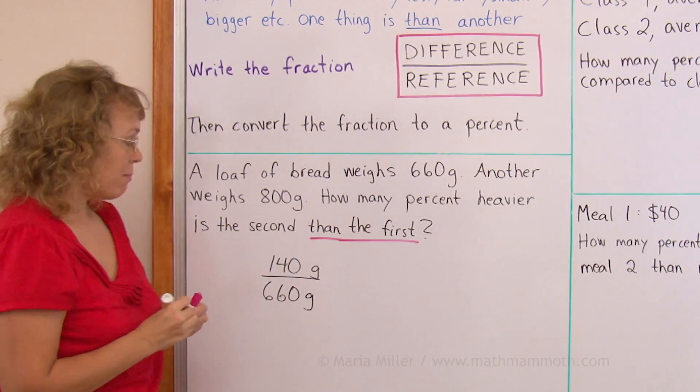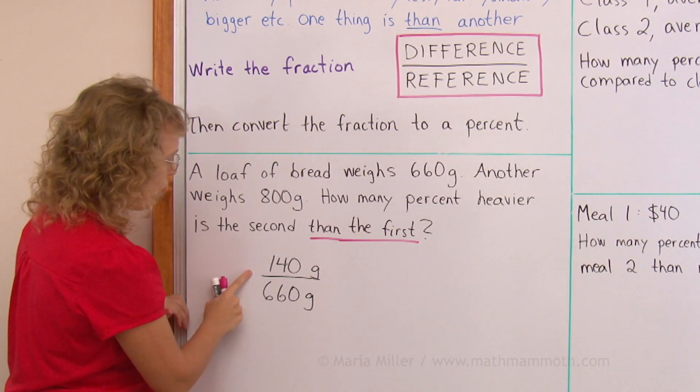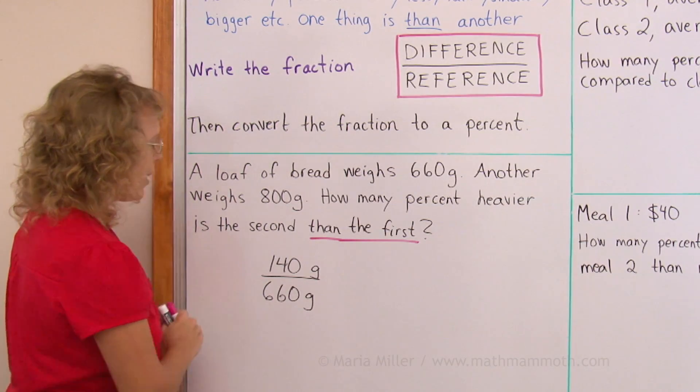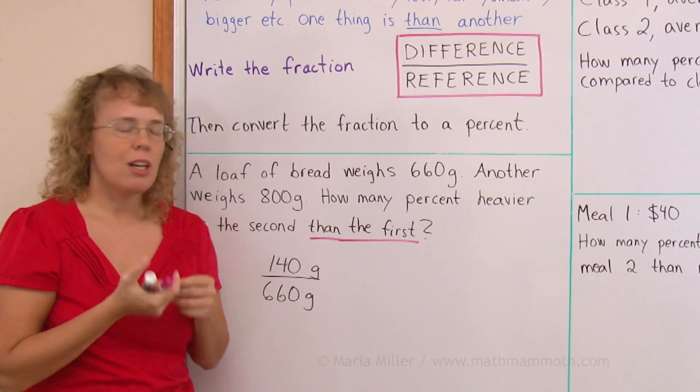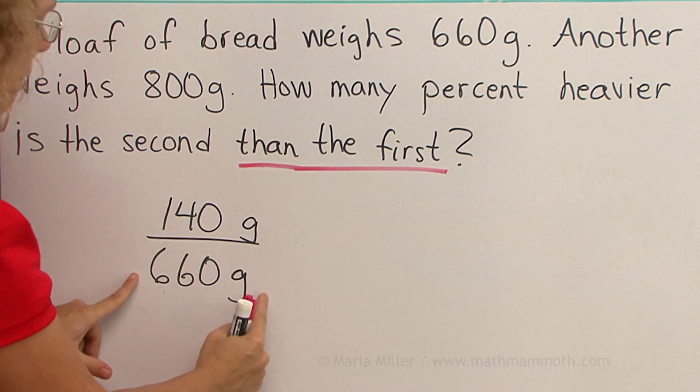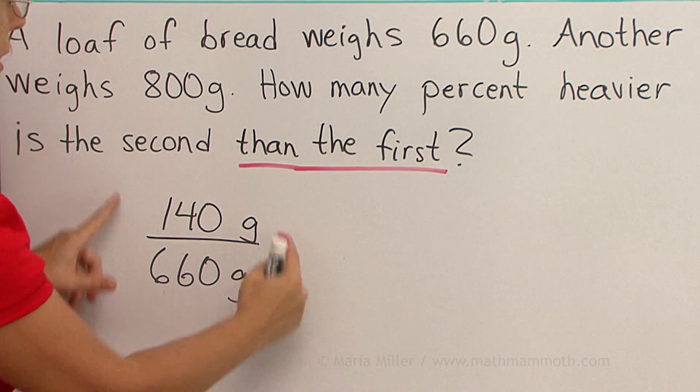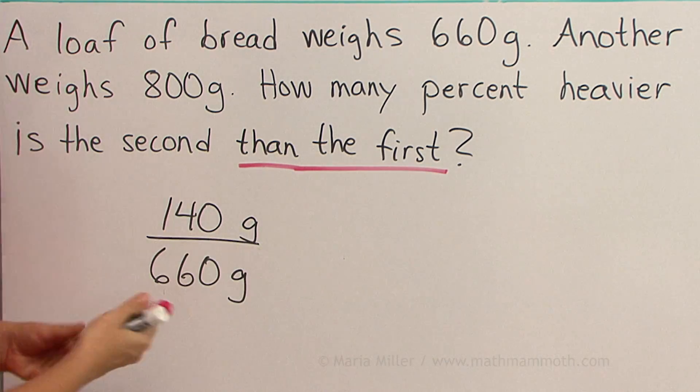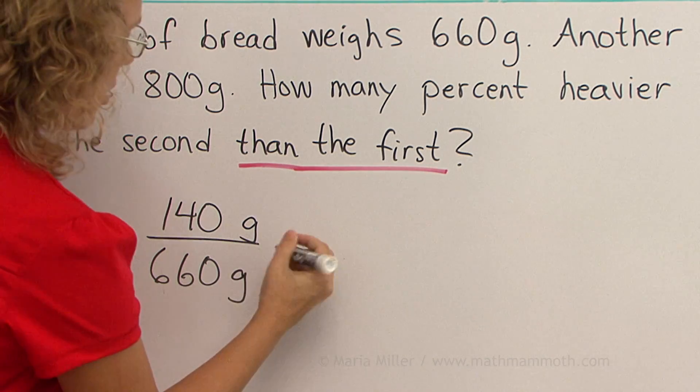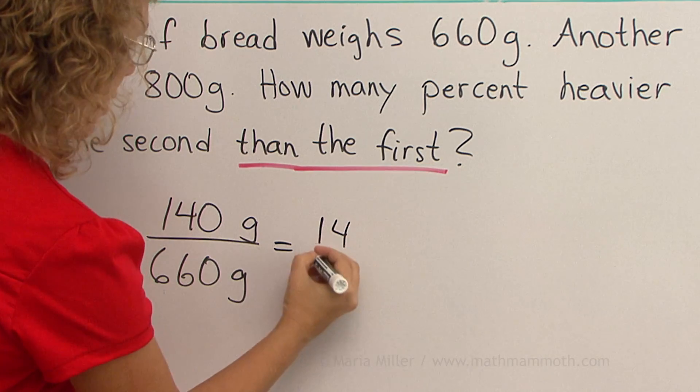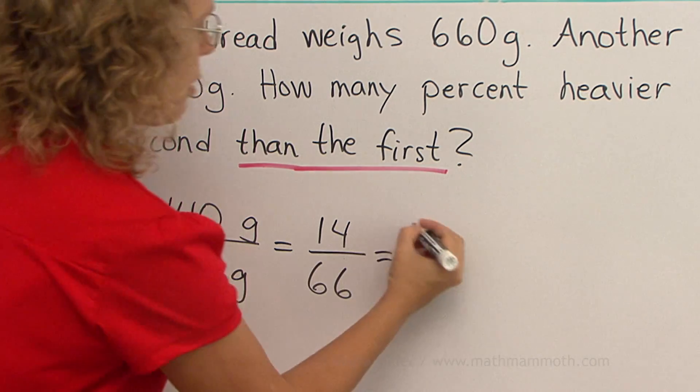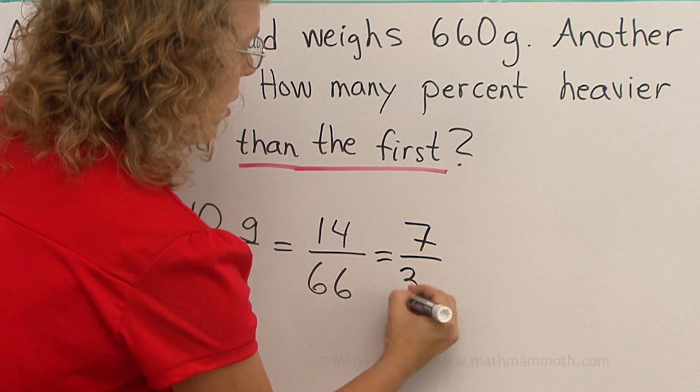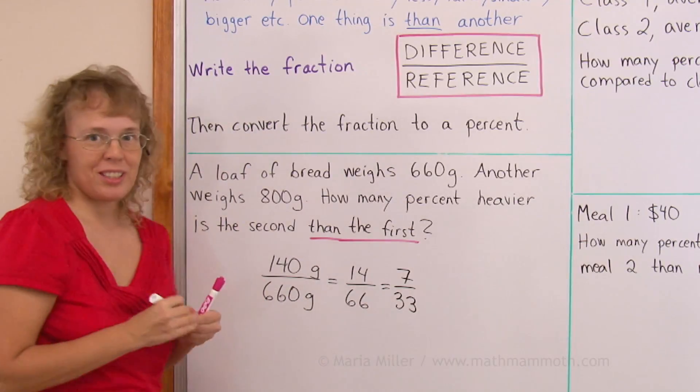And now I have my fraction here, where the difference is over the reference. Basically, the difference is 140 grams. We just need to figure out what part of this bread's weight is the difference here. So I have my fraction and it simplifies to 14 over 66, which simplifies to 7 over 33. But at this point I need a calculator.